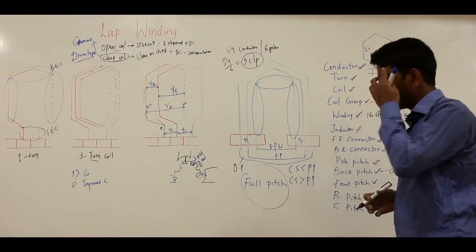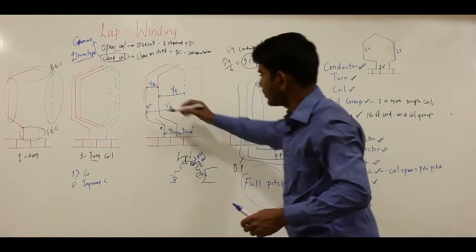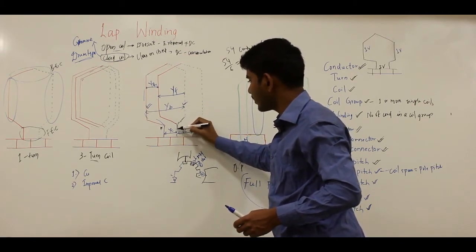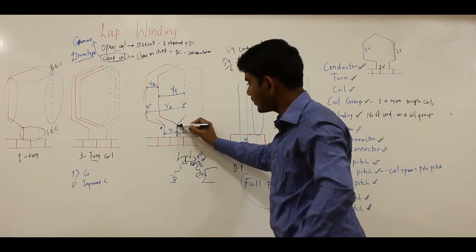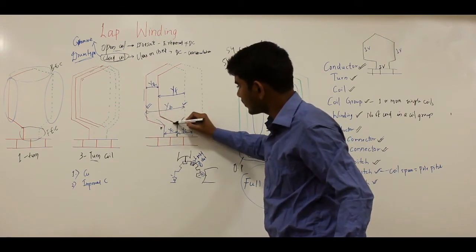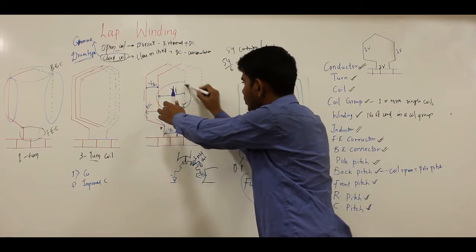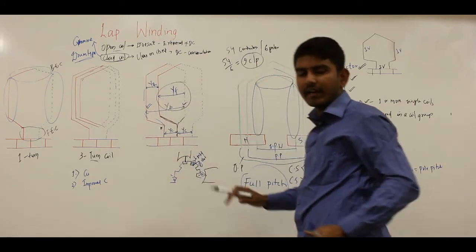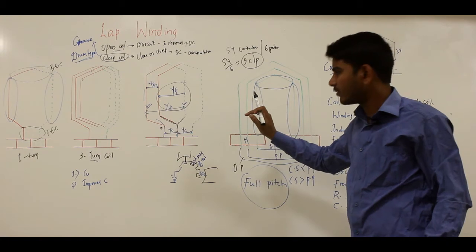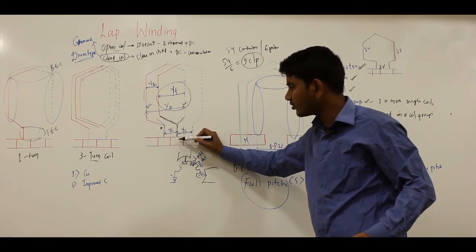In lap winding, the starting side and finishing side of a coil can be seen clearly. The finishing side of a coil is connected to a commutator segment, and this finishing side is also connected to the starting side of the next coil. There is an overlap between successive coils — this overlap is why this type of winding is referred to as lap winding. Simply defined: in lap winding, the finished side of one coil is connected to the starting side of the next coil as well as to the commutator segments.